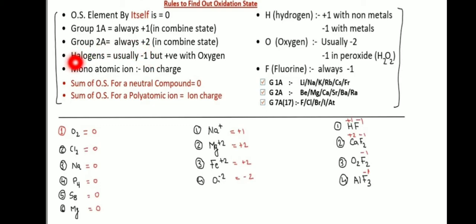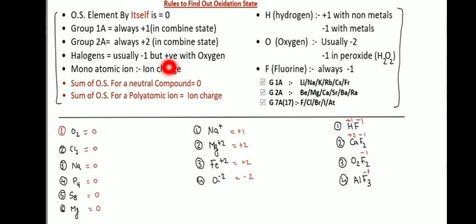Halogens — Fluorine, Chlorine, Bromine, Iodine, and Astatine — oxidation state minus one. But when combined with oxygen, halogens have a positive oxidation state, plus one or plus two.